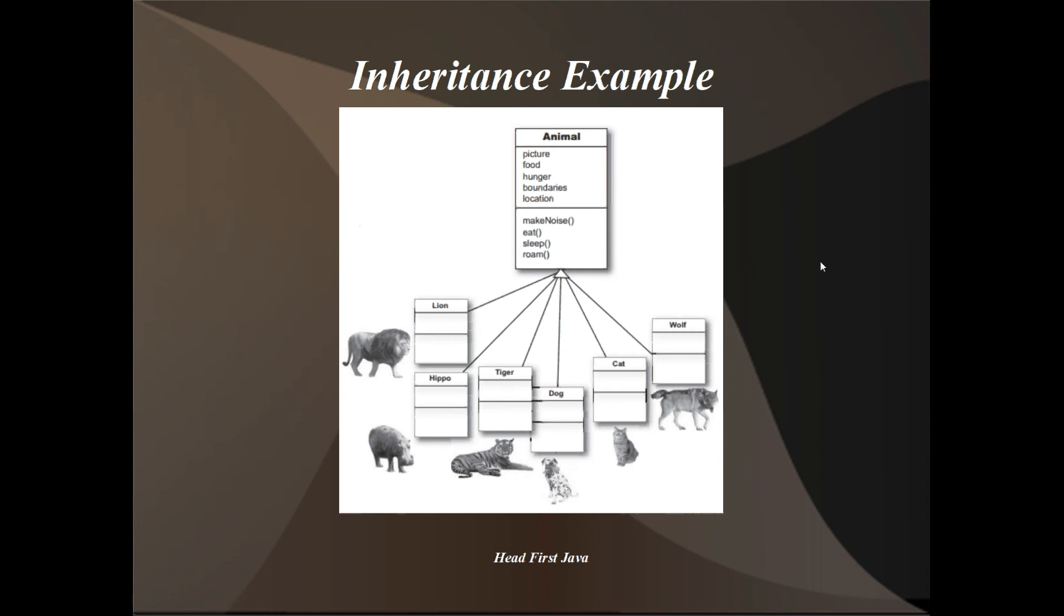So an inheritance example, this comes from headfirstjava. Let's say we have this top level class right here, animal. We're making a park simulator with a bunch of animals roaming around going about their business. Every single animal is going to have a picture variable, food, hunger, boundaries, where they're allowed to walk, and locations of where they are right now. And they're all going to have the methods make noise, eat, sleep, and roam. These are all the animals we want to have in our park.